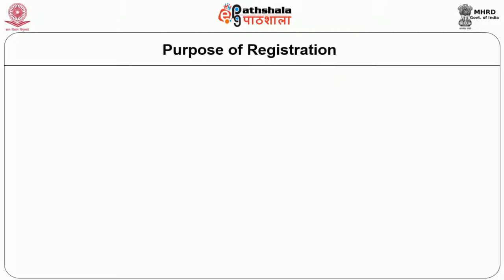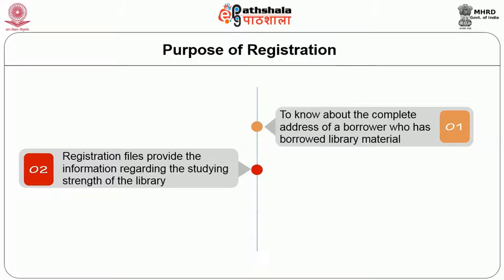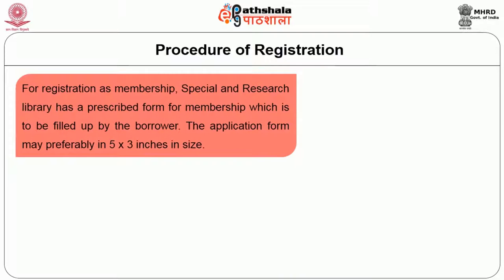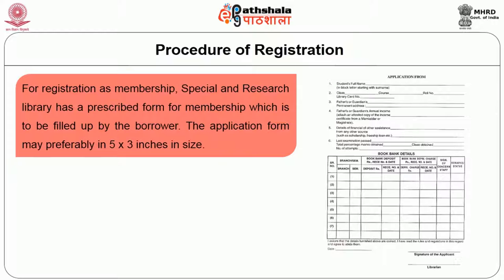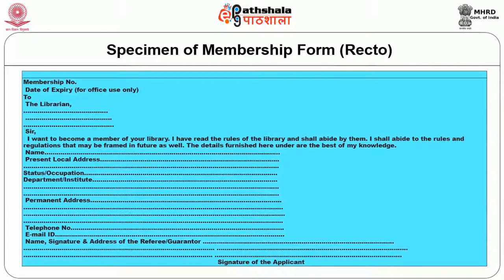The purpose of registration involves the following: firstly, to know about the complete address of a borrower who has borrowed library material; registration files provide information regarding the standing strength of the library; and registration enables the user to make use of privileges of the library. Special and research libraries have a prescribed membership form to be filled up by the borrower. The application form may be 5 x 3 inches in size. Registration is usually done for a definite period and borrower's cards are issued. The following slide shows the specimen of membership form, its recto and verso.